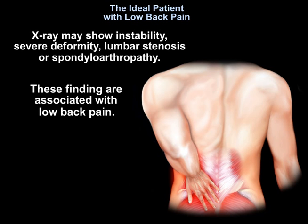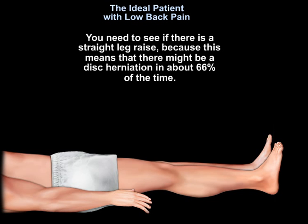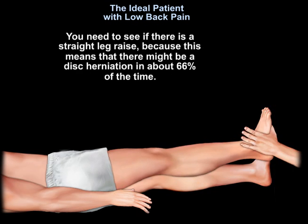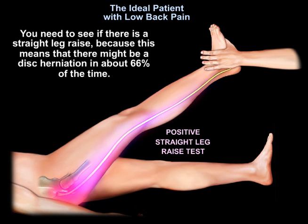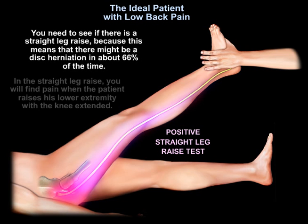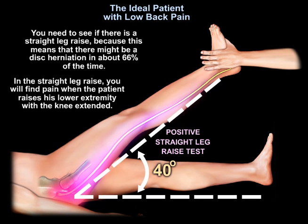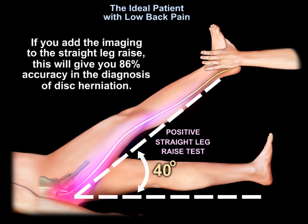These findings are associated with low back pain. You need to assess the straight leg raise, because that suggests disc herniation in about 66 percent of cases. With the straight leg raise, you will find pain when the patient raises the lower extremity with the knee extended, as shown in this diagram. If you add imaging to the straight leg raise, this gives 86 percent accuracy in the diagnosis of disc herniation.